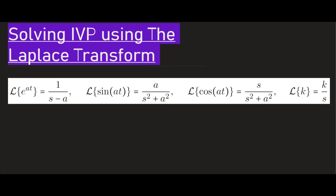The Laplace transform of a constant is equal to the constant over s. Another very useful one: if you put e to the at into the Laplace transform, it gives you 1 over s minus a — a function of the variable s. We also have sine and cosine transforms as well.